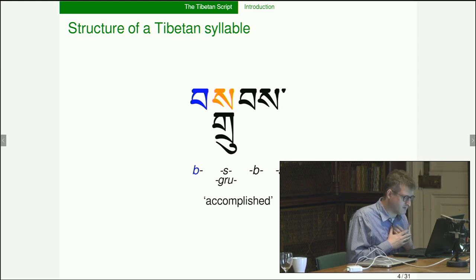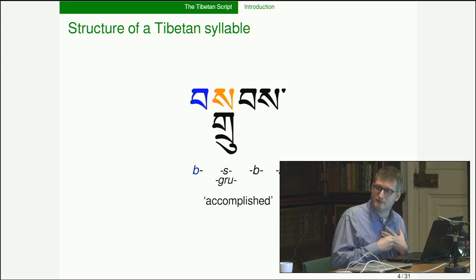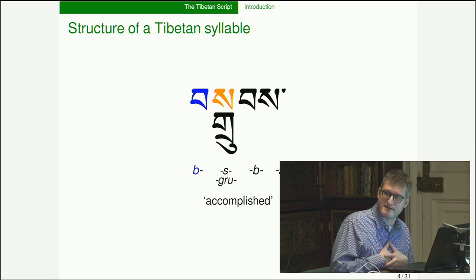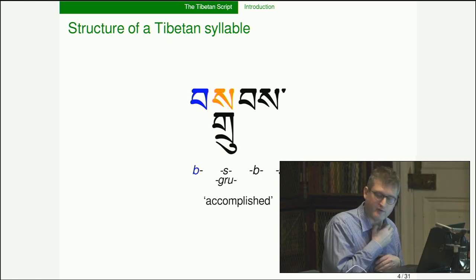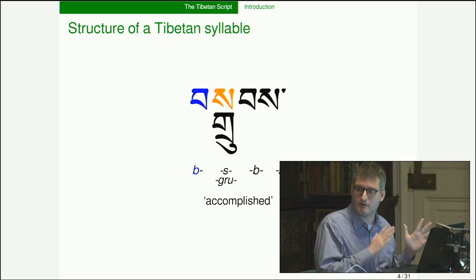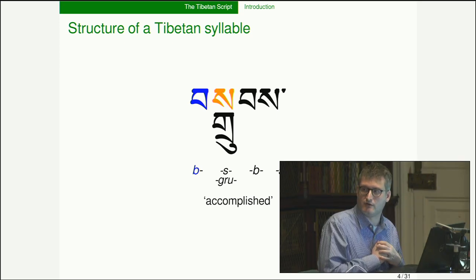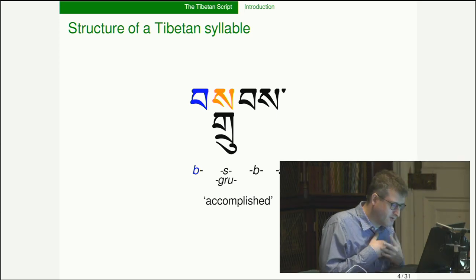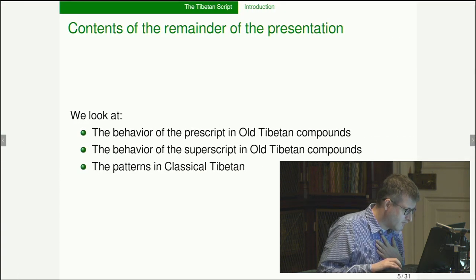Here's a Tibetan syllable: 'Drup,' which means 'accomplished.' I tried to write it in a way that might make sense even if you don't know Tibetan. The vowel and most consonants that come before the vowel are in the middle; consonants after the vowel are on the right. For some reason, the 'b' is on the left. As a convention, I've put the prescript in blue and the superscript in orange.